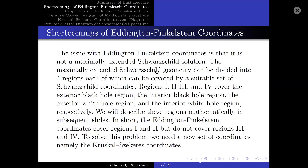Now, let us talk about some of the shortcomings of Eddington-Finkelstein coordinates. The issue with Eddington-Finkelstein coordinates is that it is not a maximally extended Schwarzschild solution. The maximally extended Schwarzschild geometry can be divided into four regions, each of which can be covered by a suitable set of Schwarzschild coordinates. Regions 1, 2, 3, and 4 cover the exterior black hole region, interior black hole region, exterior white hole region, and interior white hole region, respectively. We will describe these regions mathematically in subsequent slides.